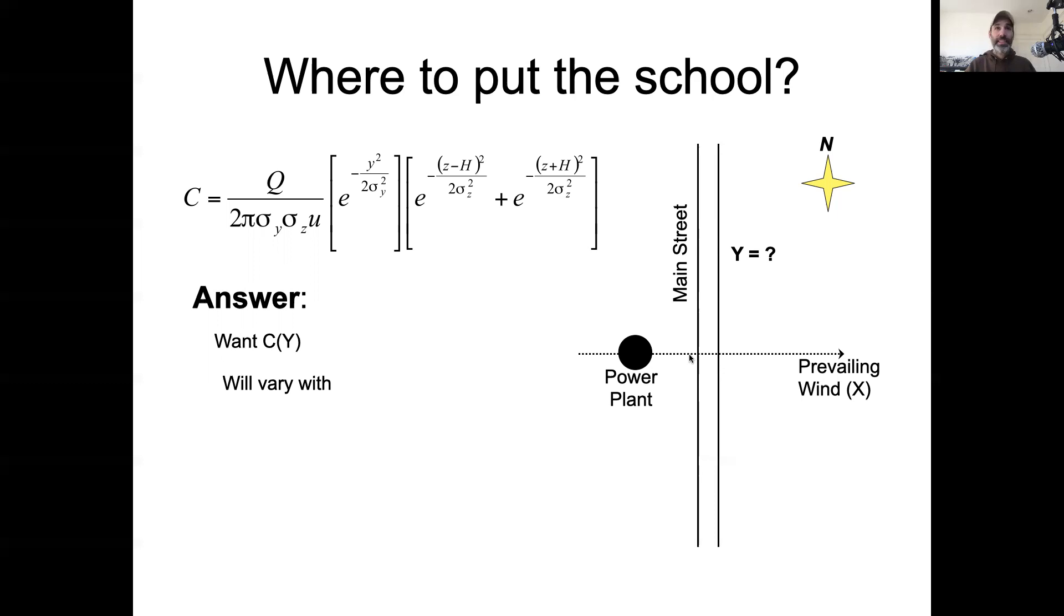Furthermore, we have a specific z in mind, which is generally we build schools on the ground. So z is going to be zero because we're going to put the school at the ground, or it could be the height of the building, but relative to the height of the smokestack, z is going to be small. For practical purposes we'll put it on the ground.